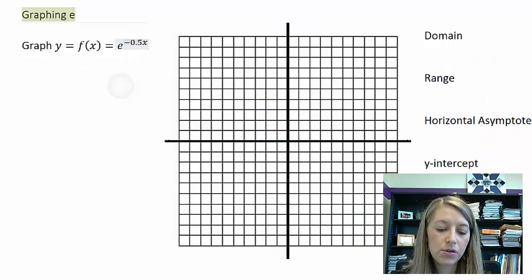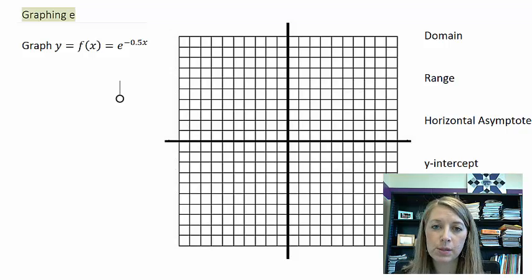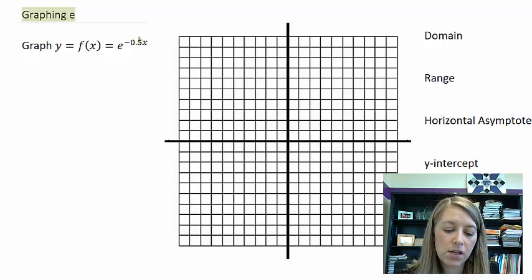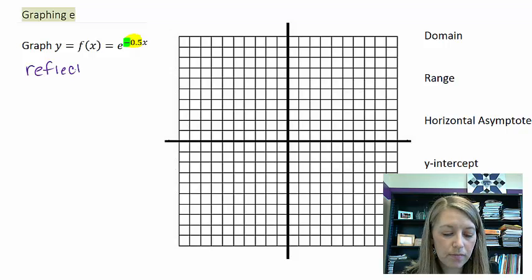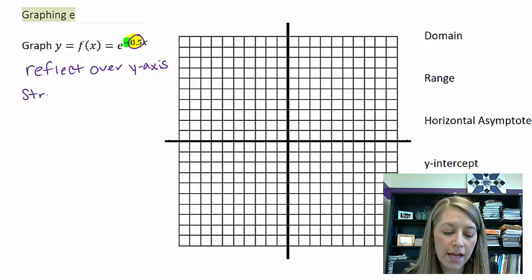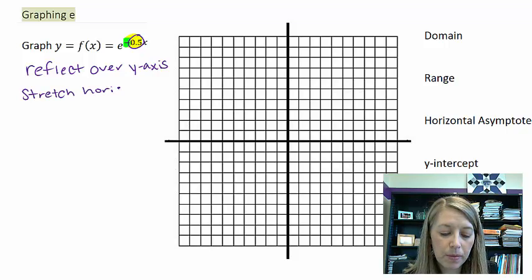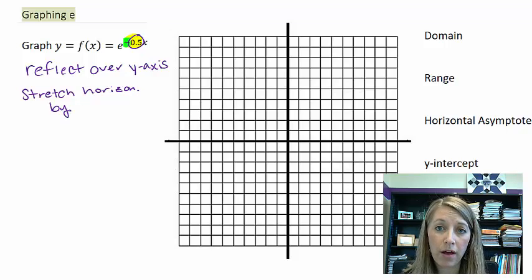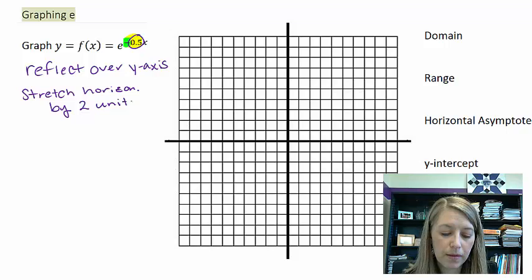Okay, a couple more of these. e to the negative 0.5x. And so I suggest that you pause the video and try and do this one on your own. So this is on the inside. I have two things here. I know the negative is going to make it reflect over the y-axis. The 0.5 times x is going to either make it stretch or shrink. It's on the inside, so a small number is actually going to make it stretch horizontally by the reciprocal of it. The reciprocal of 0.5 or the reciprocal of 1.5 is by 2 units.